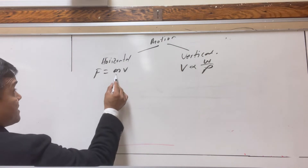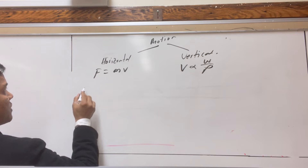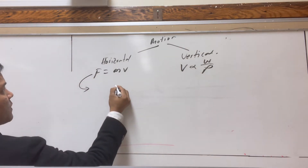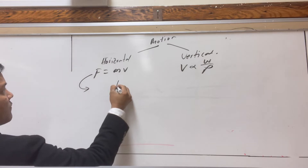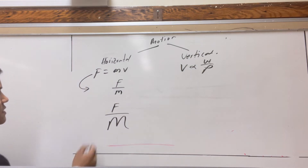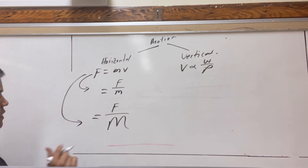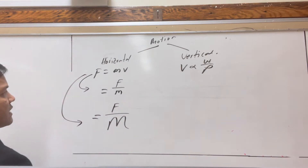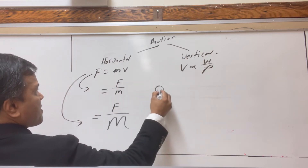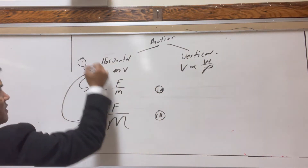This idea can be represented in an algebraic way. We have force over mass. Let's call this equation 1A and this equation 1B. So equation 1A has a small velocity, and equation 1B has a big velocity.